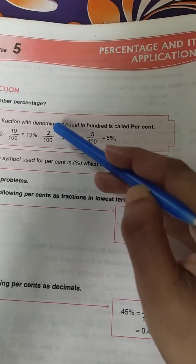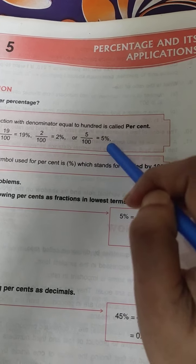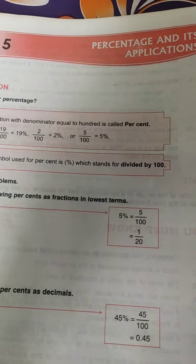19 by 100, examples 2 by 100, and this will be written as 2 percent, 5 percent. These things already you have done in class 5. Just recapitulate it.